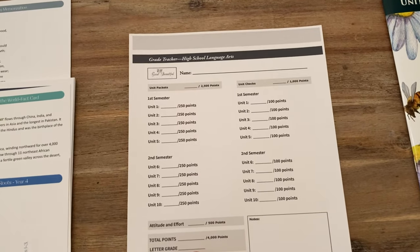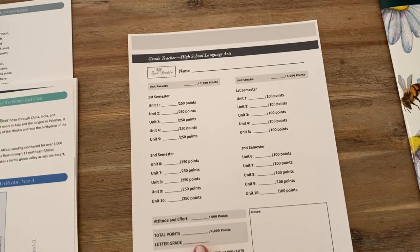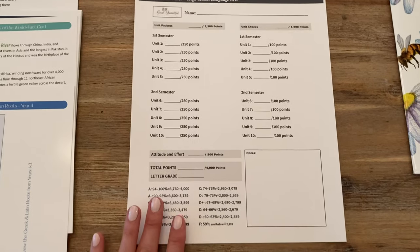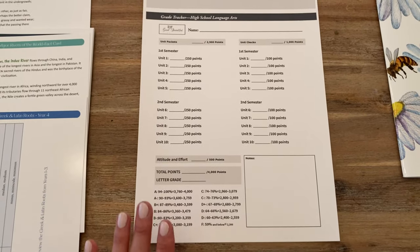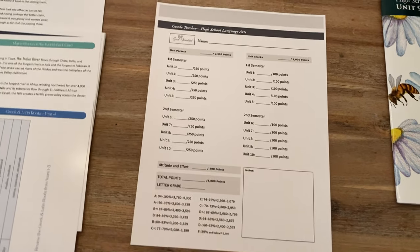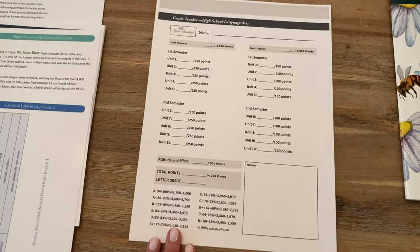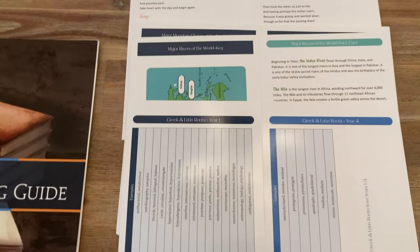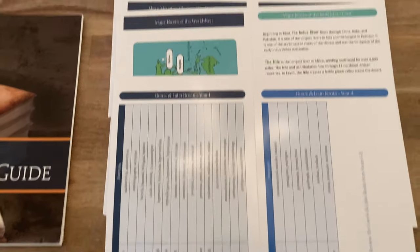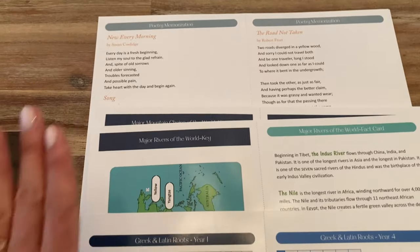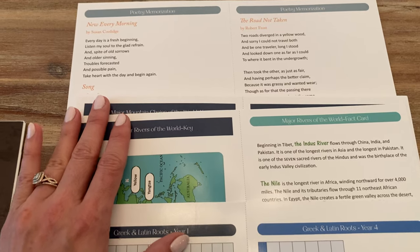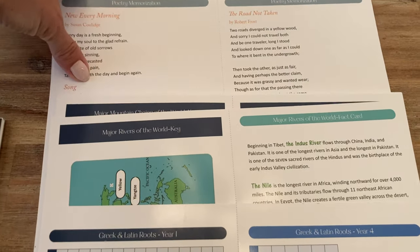This grade tracker for high school language arts I printed out from The Good and the Beautiful website — this is the one thing on the table that did not come shipped to me in hard copy. Here are the geography, grammar, and poetry memorization cards. You use these throughout all three years of The Good and the Beautiful language arts.